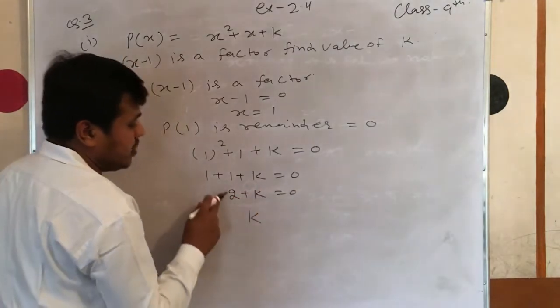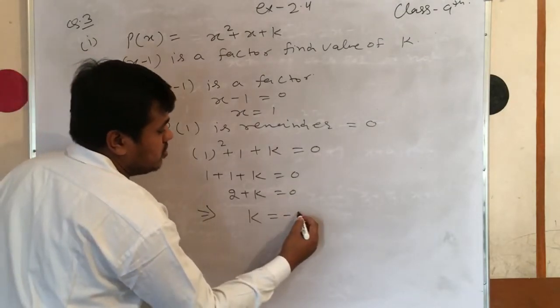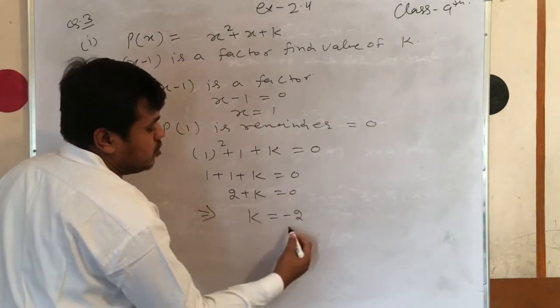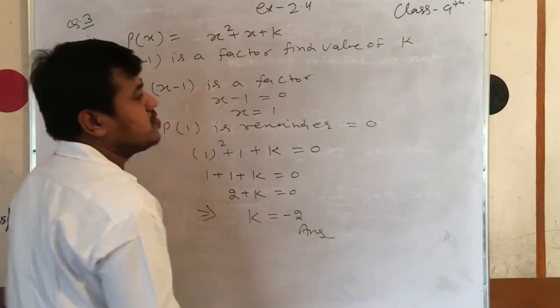So 1 plus 1 plus k equals 0, which gives us 2 plus k equals 0, therefore k equals minus 2.